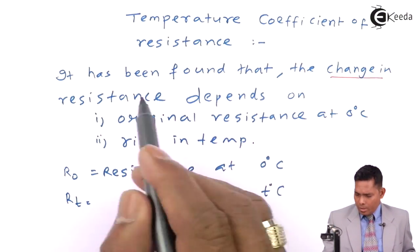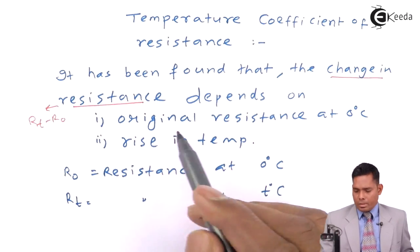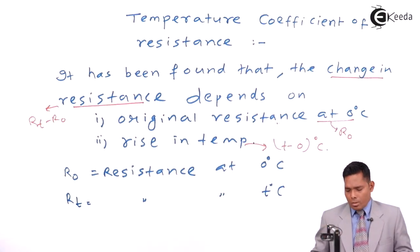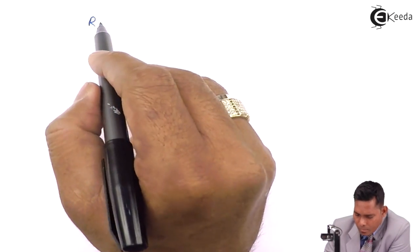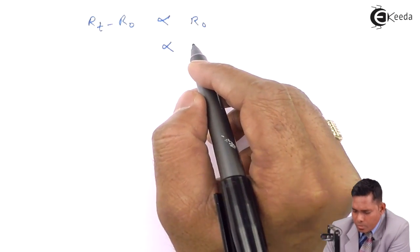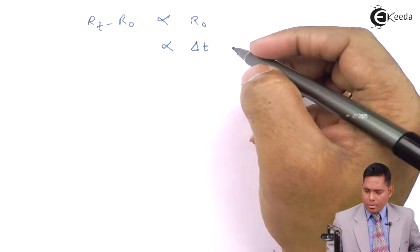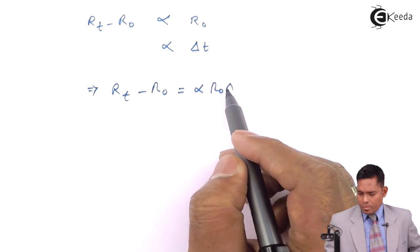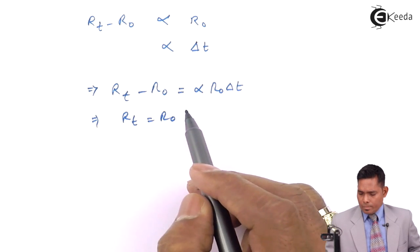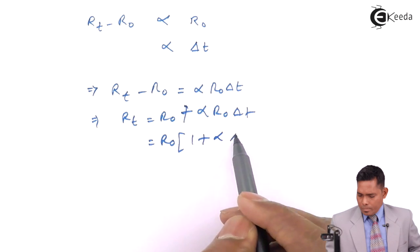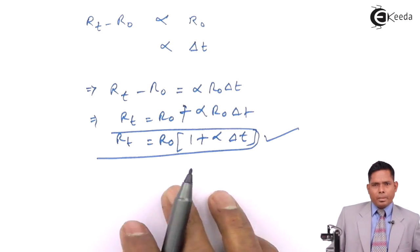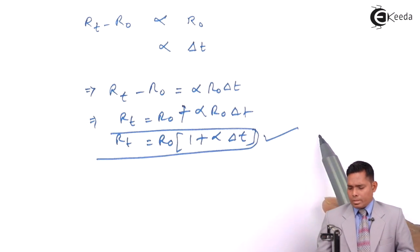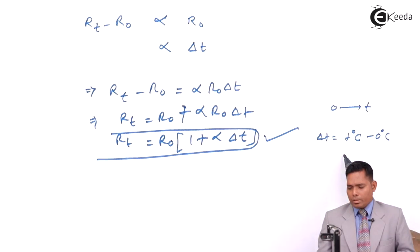If I combine the change in resistance, which is Rt minus R0, with the original resistance R0 and the rise in temperature delta T (where delta T is T, since we heat from 0 to T degrees centigrade), the increase in resistance depends on both R0 and delta T. So Rt minus R0 is proportional to R0 times delta T. This gives us the expression: Rt = R0 into (1 + alpha·delta T). Here delta T is T, since the final temperature is T degrees centigrade.